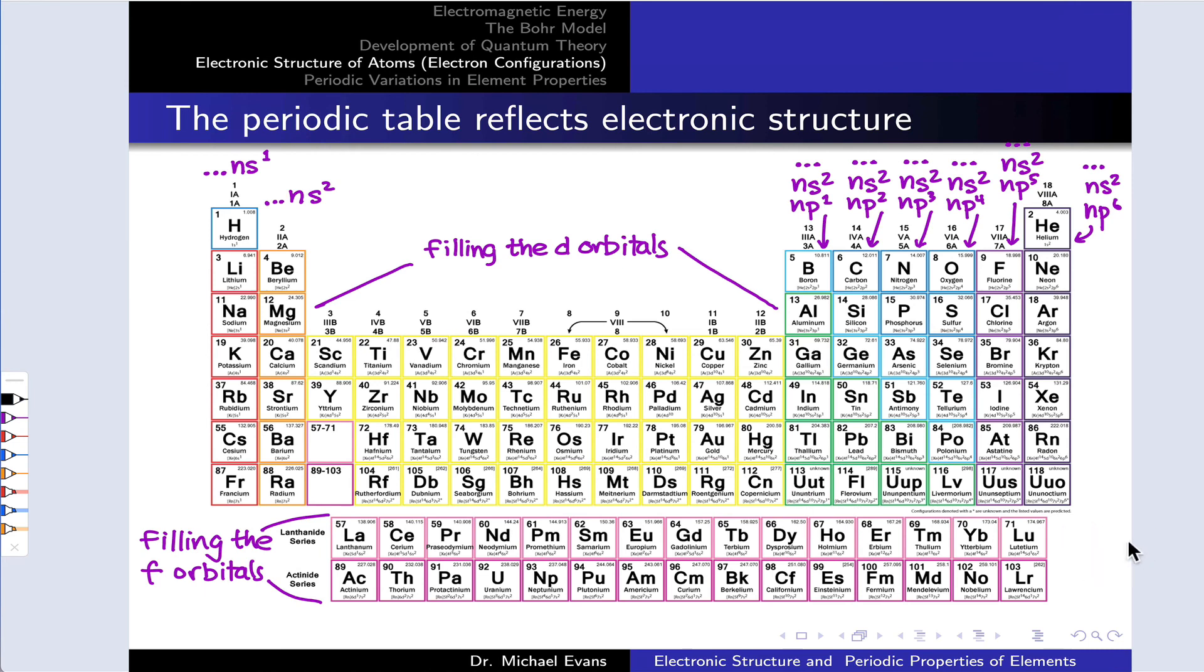The number of elements in each block, particularly as we look left to right, reflects the capacity of that subshell for electrons. There are six spots for electrons in the P subshell. And sure enough, there are six elements from left to right across the P block. That's not a coincidence. There are two spots for electrons in an S subshell and two columns in the S block. Again, not a coincidence.